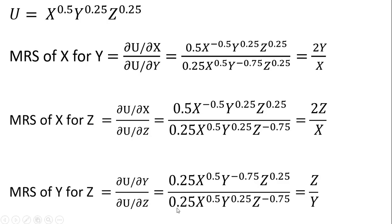Simplifying: 0.25 divided by 0.25 is just 1. The x terms cancel. Bringing this y to the minus 0.75 down into the denominator leaves us with just y. And moving this z to the minus 0.75 into the numerator leaves us just with z in the numerator. And that is our result. I hope you found this video helpful.